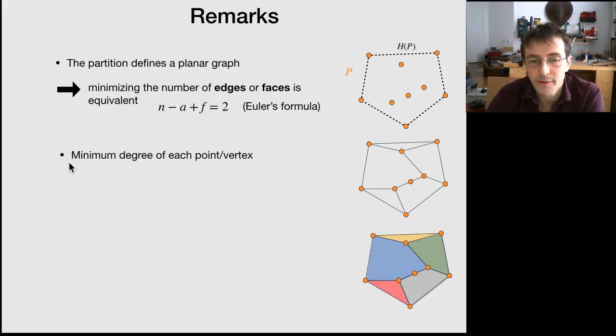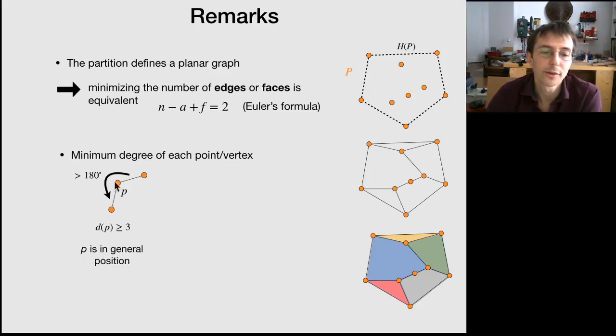The second point is that you have a minimum degree for each vertex or each point. And this is due to the convexity constraints. Typically, when you consider a point P, which is not on the same line than any two other points, so P is said to be in general position, well, P has a degree of at least 3,